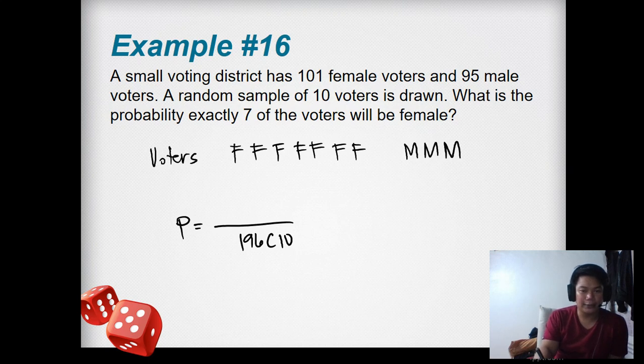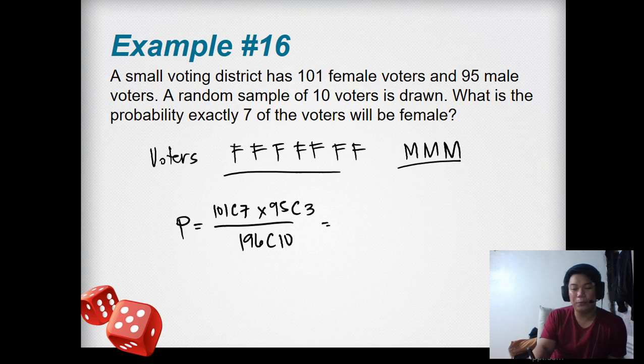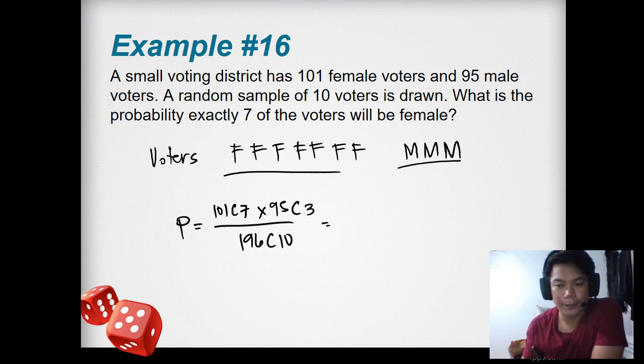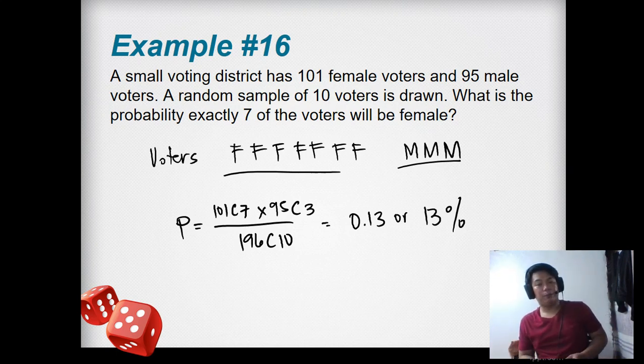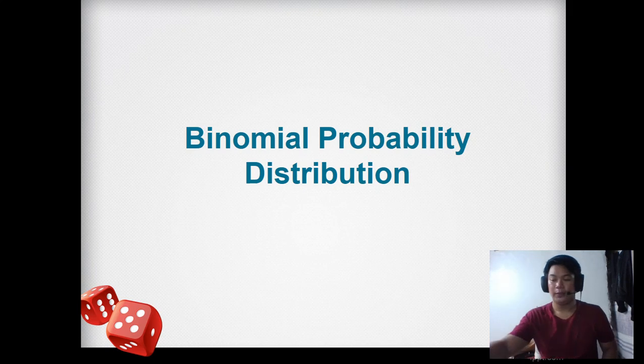We need 7 females. If 7 are female and there are 101 females total, that's 101C7. Times the males, 95, we need 3, so 95C3. This is a sampling application. The answer is 0.13 or 13 percent. Out of all the combinations, the probability of having exactly 7 females out of 10 is 13 percent.